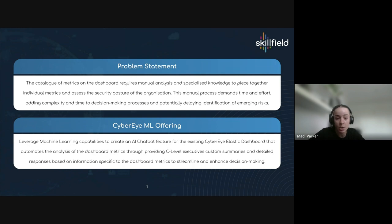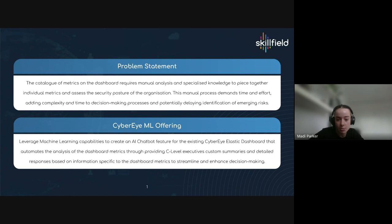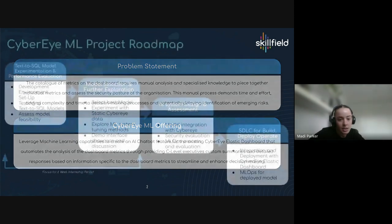This manual process can potentially delay identification of emerging risks. The Cyber Eye machine learning offering aims to leverage machine learning capabilities to create an AI chatbot feature within the existing Cyber Eye Elastic dashboard that can automate this analysis and provide C-level executives with custom summaries and detailed responses regarding specific Cyber Eye metrics, streamlining and enhancing the decision making process.